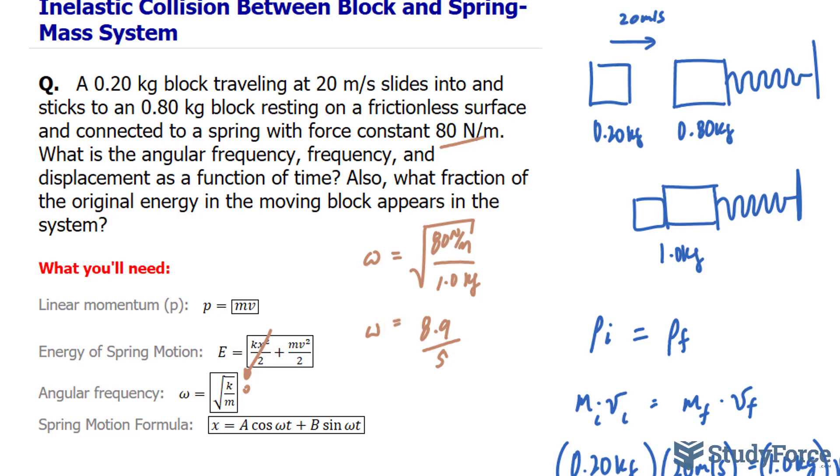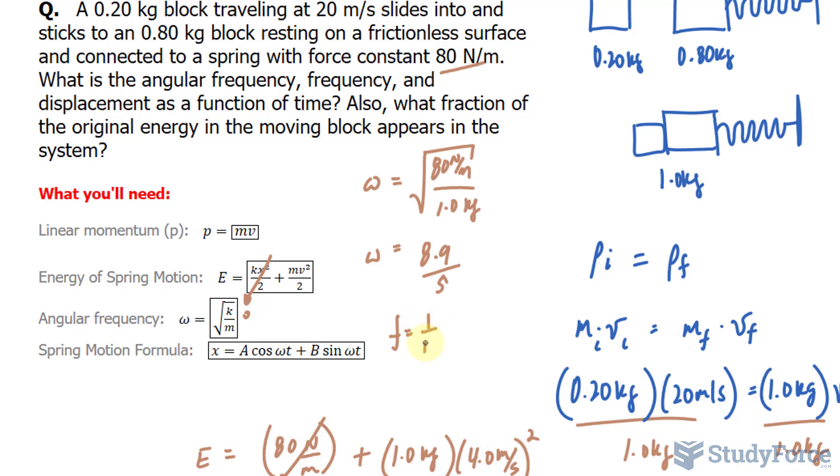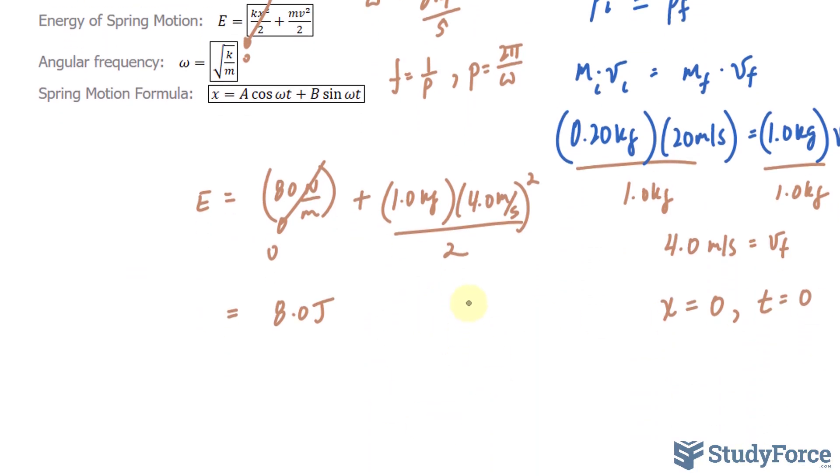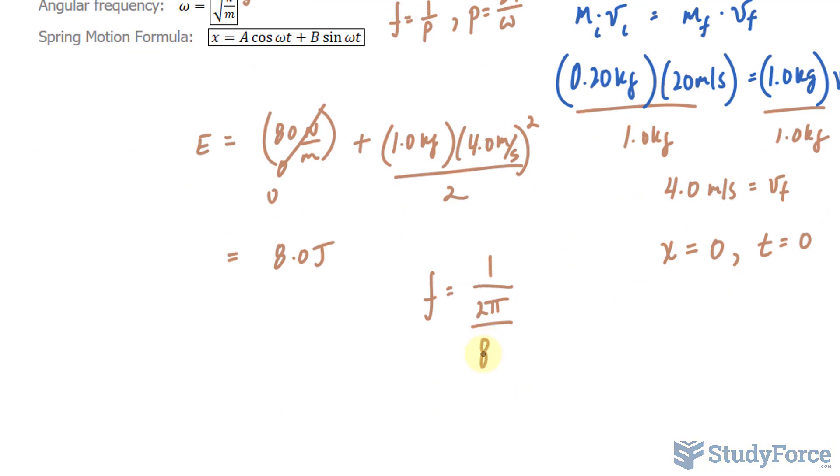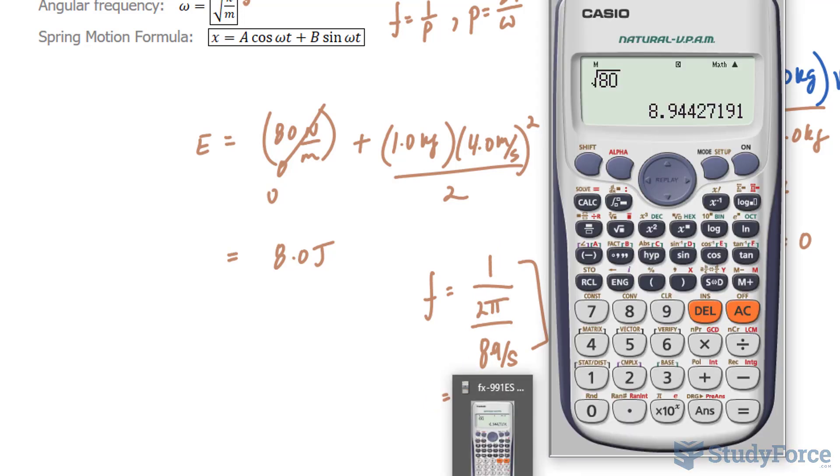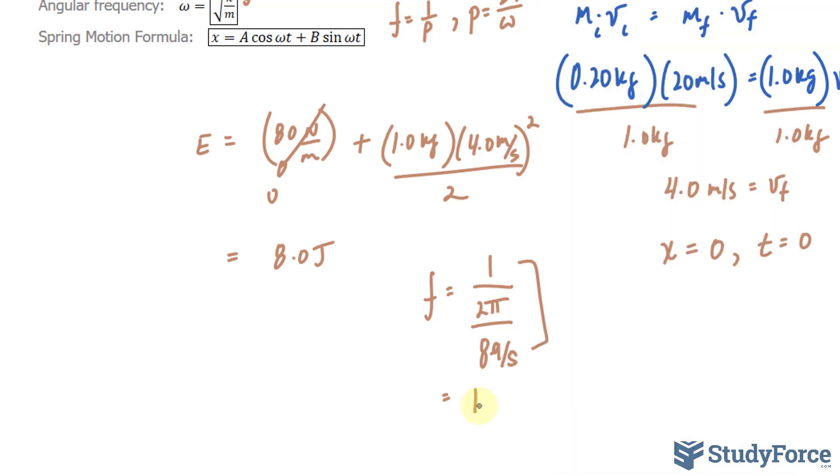To get the frequency, frequency, remember, is 1 over the period. And period, in this case, I'll write down the formula here, period is 2 pi over the angular frequency. So let me just continue my work down here. I have the frequency being 1 over the period, and I'll replace that expression in for p. The angular frequency is 8.9 per second. And if you divide all of this out, it's like saying 1 divided by 2 pi over 8.9. That gives you 1.4. So the frequency is 1.4. Again, the units are per second.